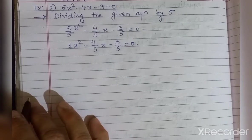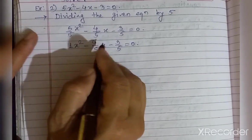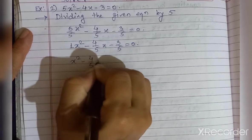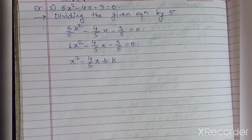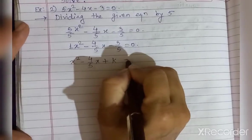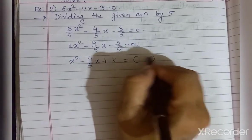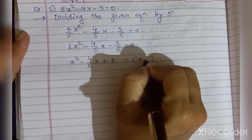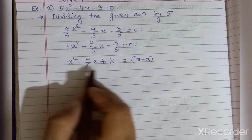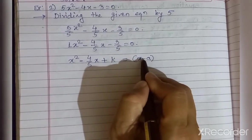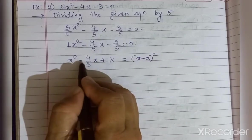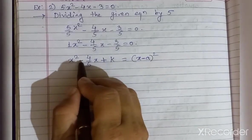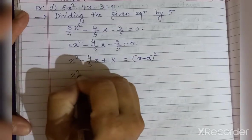The first step is to add a suitable term to the first two terms so we get a complete square. If we use (x minus a)², the middle term has a minus sign, so we take (x minus a). If the middle term had a plus sign, we would take (x plus a). Here I take minus because the middle term sign is minus.